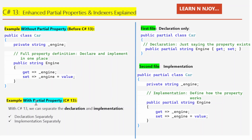Now let's look at the example with partial properties that come with C# 13. With C# 13, we can separate the declaration and implementation. Think of it like splitting a task between two people: one person decides what needs to be done — that's the declaration — and the other figures out how to do it — that's the implementation. Declaration is written separately, implementation separately, and this is possible due to the partial property introduced in C# 13.